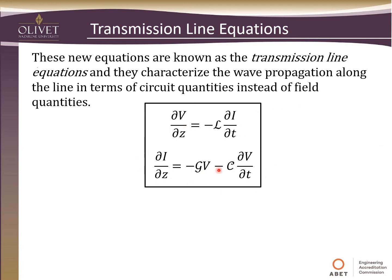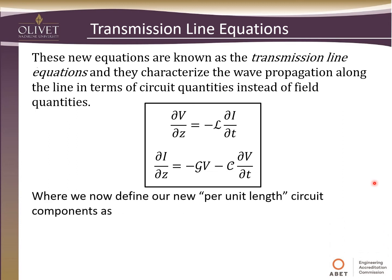These are the transmission line equations — really just Maxwell's equations, Faraday's law and Ampere's law — but because of the way we've constructed our model, we've related voltage and current instead of electric field and magnetic field. These are our new per-unit-length circuit components: inductance per unit length, capacitance per unit length, and conductance per unit length. Very useful tools in our tool bag.